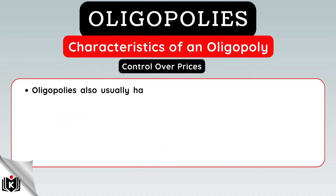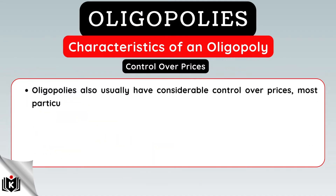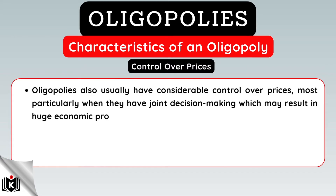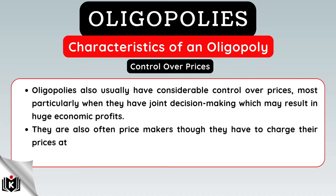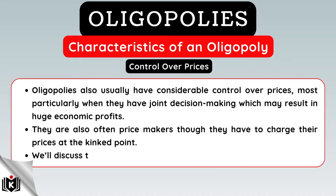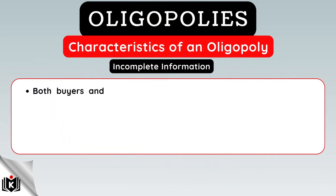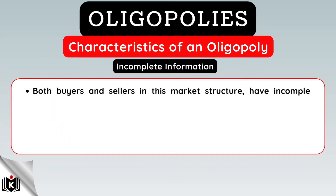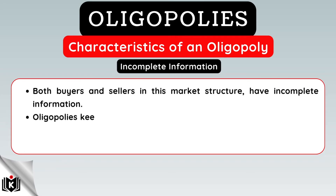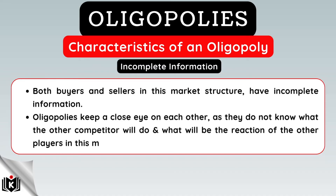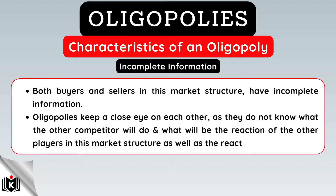Oligopolies also usually have considerable control over prices, most particularly when they have joint decision-making, which may result in huge economic profits. They are also often price-makers, though they have to charge their prices at the kinked point, which we'll discuss later on in the video. Both buyers and sellers in this market structure have incomplete information. Oligopolies keep a close eye on each other, as they do not know what the other competitor will do and what will be the reaction of the other players in this market structure, as well as the reaction of buyers.